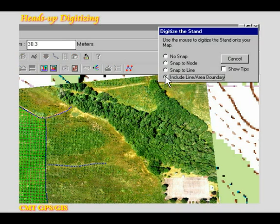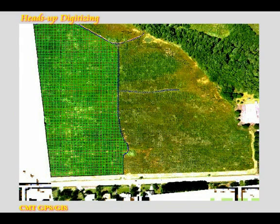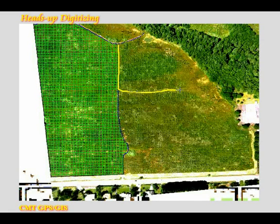For this stand of spruce trees, I will start by including part of the pathway that runs down the center of the tree farm. In the include line area boundary mode, I click on the beginning and ending nodes that I wish to include from this pathway. I click on the beginning and ending nodes of the small pathway to include them also.